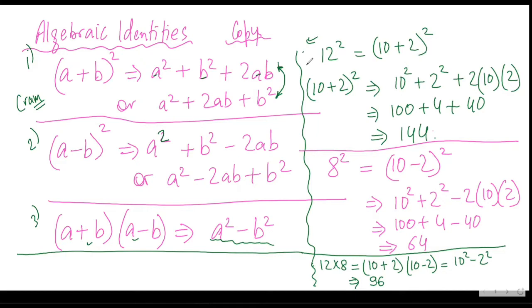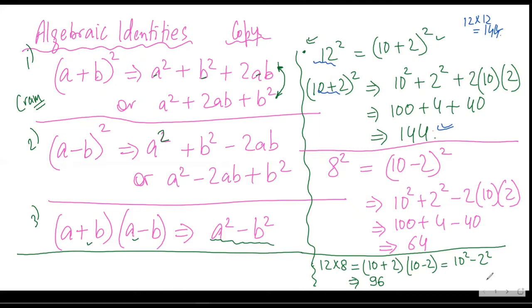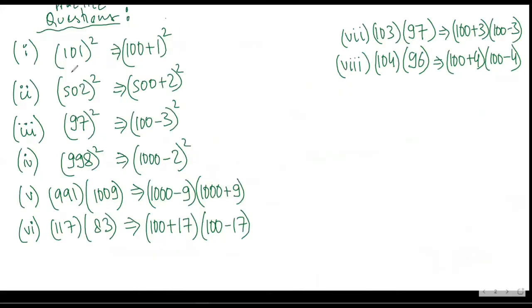For example, if I have to calculate 12², using this identity I can write 12 as (10 + 2)². Any doubt? No. Of course you can do 12² as 12 into 12 and arrive at 144, but what I want you to learn is how 12 can be written as (10 + 2)² and then you can apply the identity to find the same answer. So for example, 101² can be written as (100 + 1)².